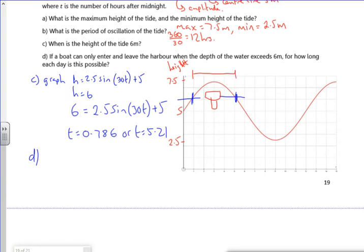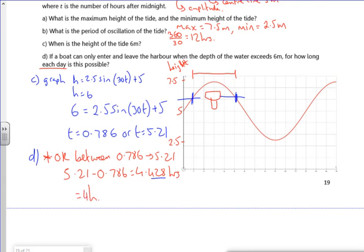So between these times, I'm OK. So I'm OK between 0.786 and 5.21. So it wants to know for how long each day. So if I do 5.21 minus 0.786, that gives me roughly 4.428 hours. And then on my calculator, if I do 0.428 times 60, it tells me that it's 4 hours and 26 minutes.